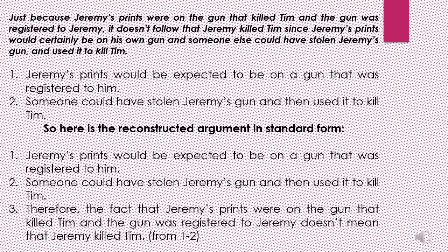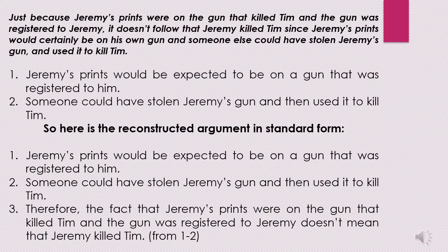So, the reconstructed argument in standard form will be: 1. Jeremy's prints would be expected to be on a gun that was registered to him. 2. Someone could have stolen Jeremy's gun and then used it to kill Tim. Therefore, the conclusion: the fact that Jeremy's prints were on the gun that killed Tim and the gun was registered to Jeremy doesn't mean that Jeremy killed Tim, and this conclusion has been derived from premises 1 and 2.